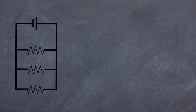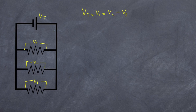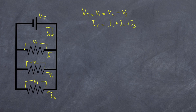In a parallel circuit, the total voltage is constant across all branches — so VT equals V1 equals V2 equals V3. However, the total current splits into different paths: current one through the first branch, current two through the second, current three through the third. The total current IT equals I1 plus I2 plus I3.